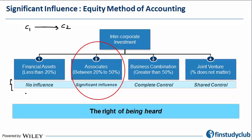So far we have talked about financial assets, the passive investments, and marketable securities, which give no influence to the investor. Generally, investments of less than 20 percent of equity fall into this category.